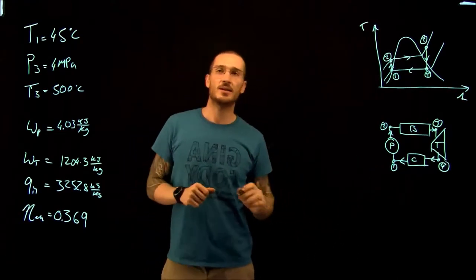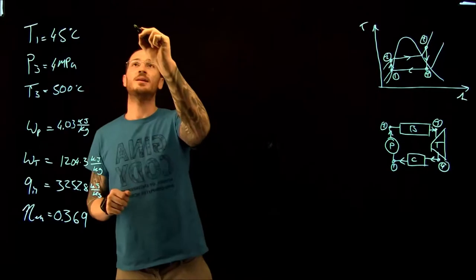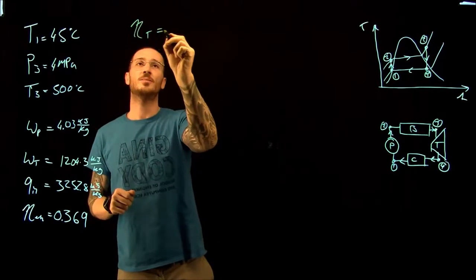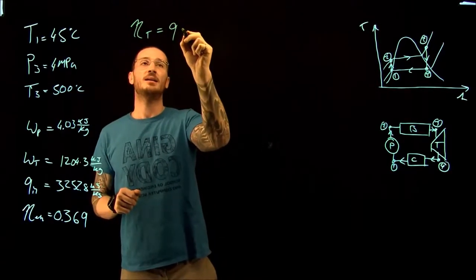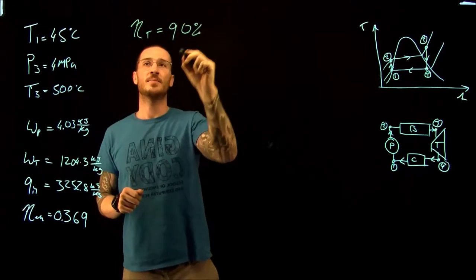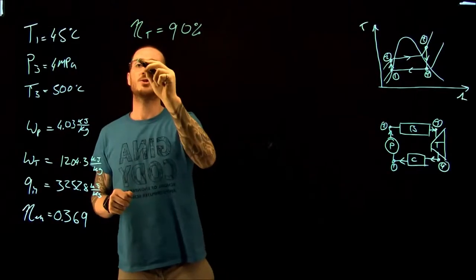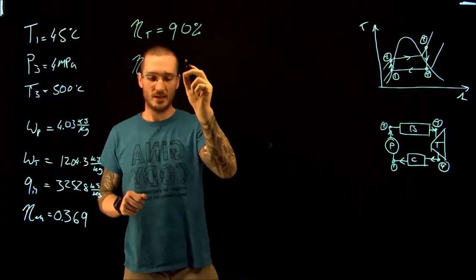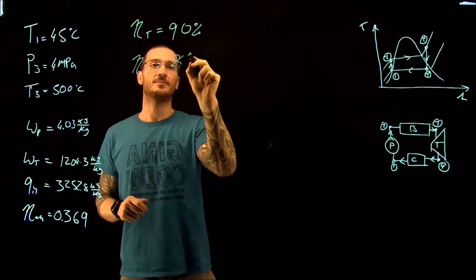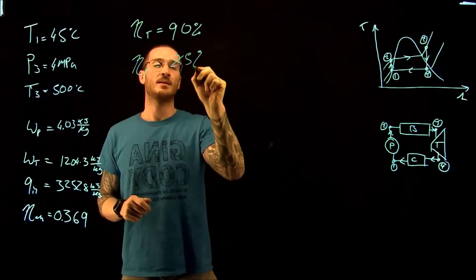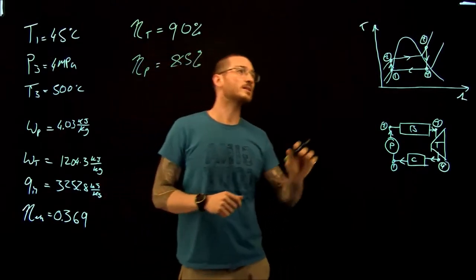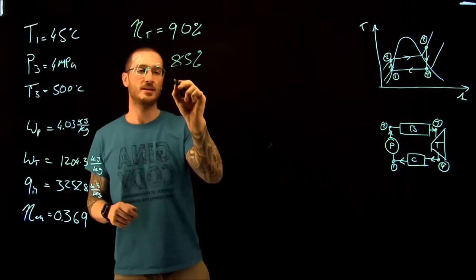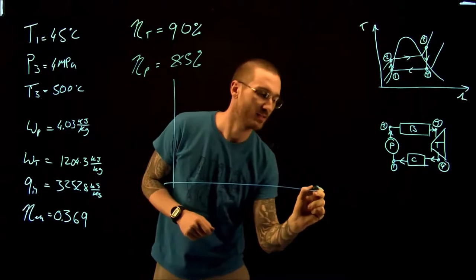The only addition here is that we're told that the isentropic efficiency of the turbine is 90% and the isentropic efficiency of the pump is 85%. What this looks like on our TS diagram is something like this.